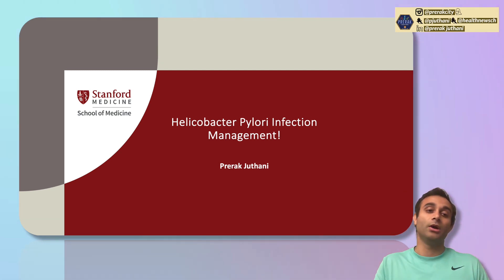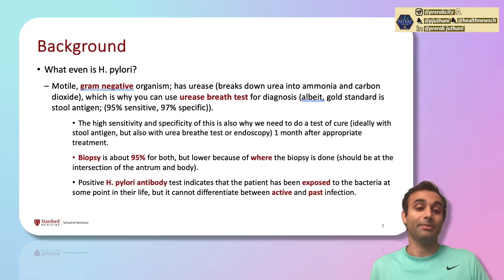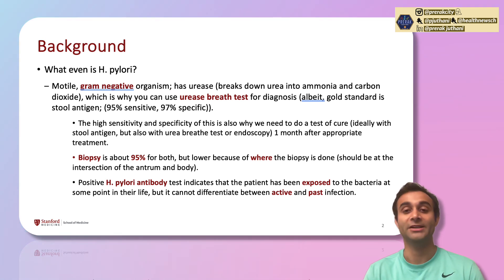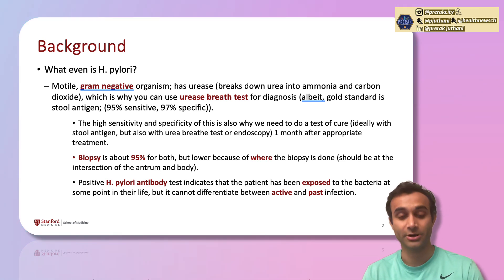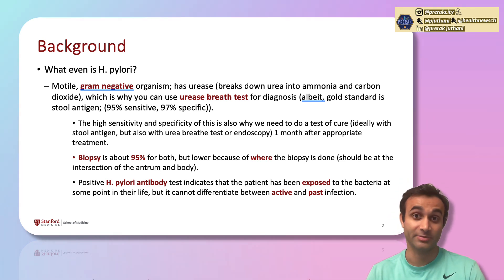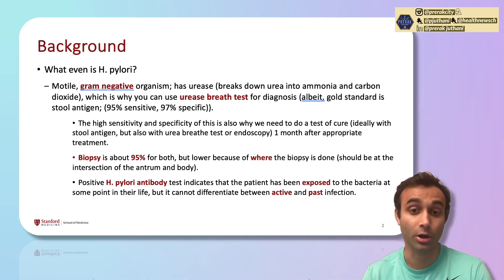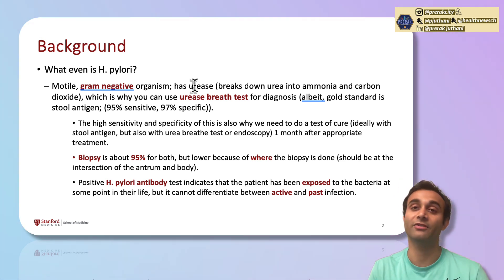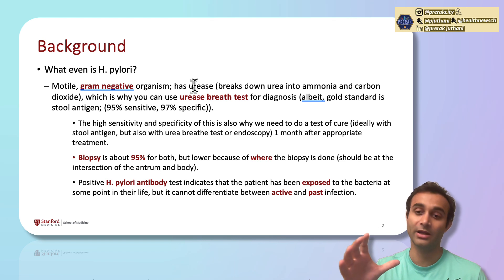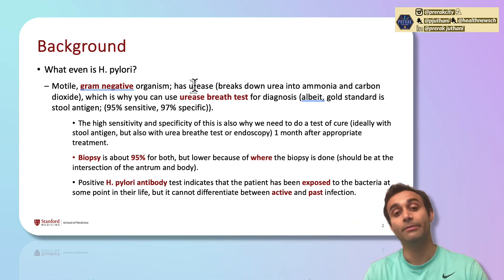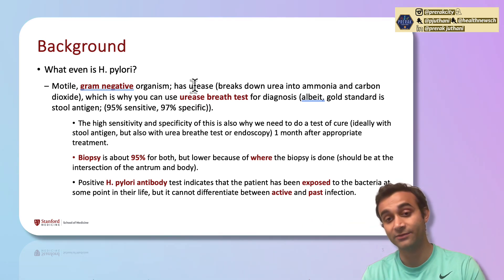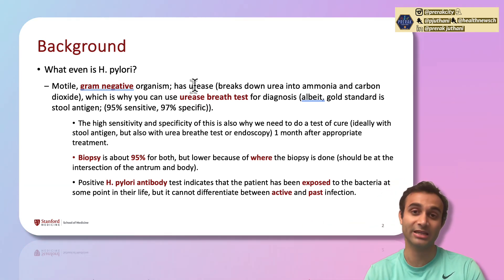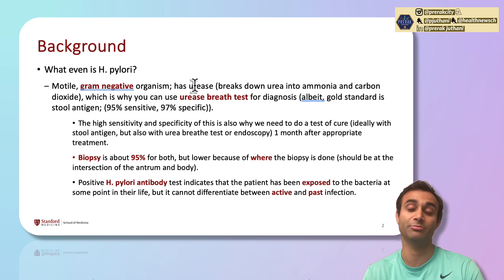I want to start with a background on what H. pylori is. H. pylori is a gram-negative bacterium, which means it does not have a peptidoglycan cell wall. It often has an enzyme called urease, which breaks down urea into ammonia and carbon dioxide. Because of the presence of urease, we can use a urease breath test to diagnose H. pylori.